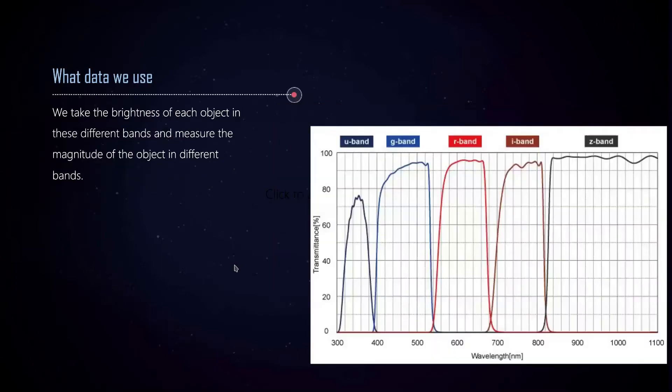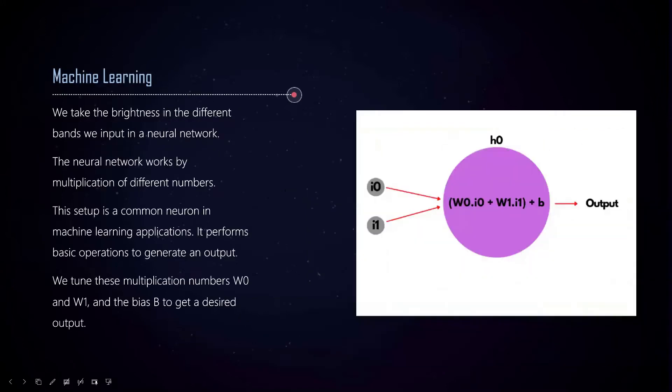Each object can be photographed in different filters, and as these filters cover different parts of the electromagnetic spectrum, we can see how bright they are in different bands. Because we have so many stars and non-star objects in the sky, we have to figure out an efficient way to classify these objects. To do that, we are now exploring machine learning methods. Machine learning is, in basic terms, the way to teach a computer how to learn to solve a complex problem by itself.